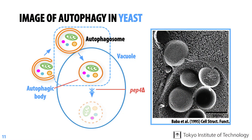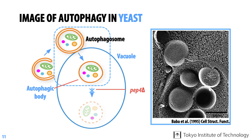This electron microscope picture was obtained using a different technique which allows us to observe several structures in three dimensions. Here is a vacuole membrane and here is the autophagosome. We can observe the exact moment of fusion between the autophagosome and vacuole. We can also see several spherical structures — autophagic bodies — within the vacuole. Autophagic bodies are rapidly broken down in normal cells, but this cell lacks the vacuole enzyme responsible for their destruction, so autophagic bodies accumulate in the vacuole.